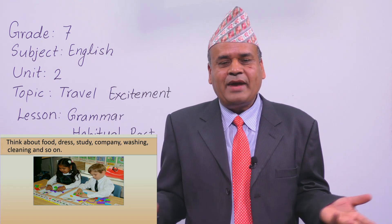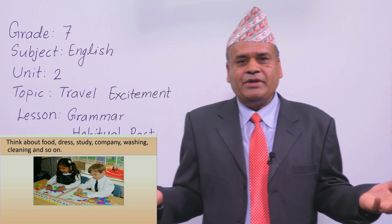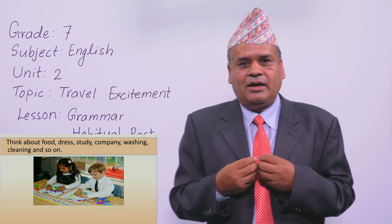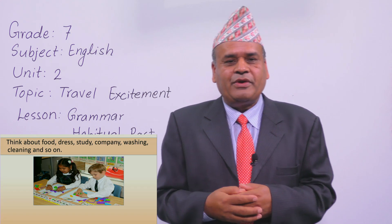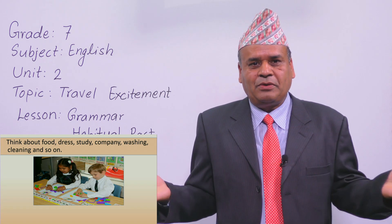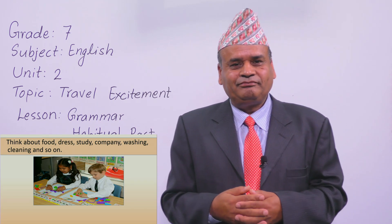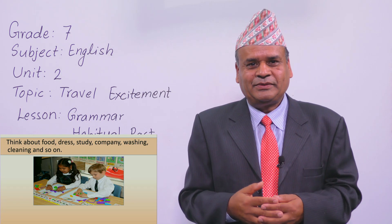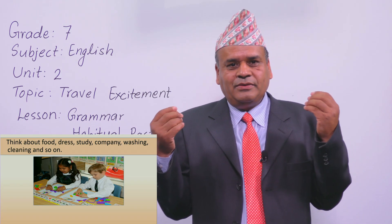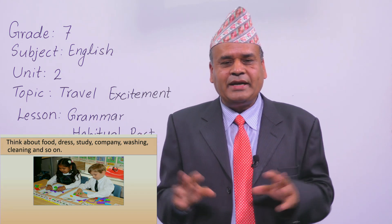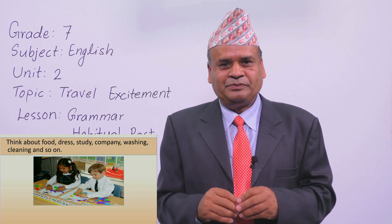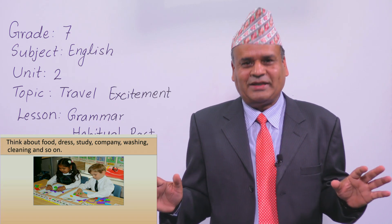And company — that means friends. You used to be with your parents most of the time. Nowadays you always go with your friends. And washing — nowadays you can wash your clothes. But when you were in grade one, your parents would help you. You did not use to wash your clothes. And cleaning — nowadays you can clean your room. But when you were in grade one, you did not use to clean your room. You were too small to clean your room and you did not have the idea of how to clean properly.